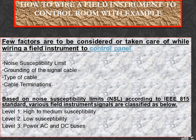Today our channel Engineering Concepts discusses how to wire a field instrument to the control room with examples. A few factors are to be considered while wiring a field instrument to the control panel: noise susceptibility, limit grounding of the signal cable, type of cable, and cable terminations. These are based on noise susceptibility limits (NSL) according to IEEE 815 standard.